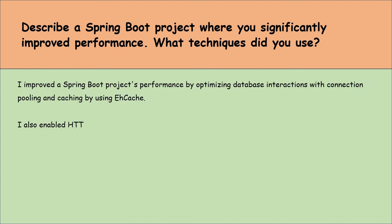Your application needs to store and retrieve files from a cloud storage service. Describe how you would integrate this into a Spring Boot application. To integrate cloud storage, I would use a cloud SDK like AWS SDK for S3 or Google Cloud Storage libraries depending on the cloud provider. First, add the SDK as a dependency in the pom or Gradle file. Then configure the necessary credentials and settings in application.properties or YAML file for accessing cloud storage. I would create a service class to encapsulate the storage operations like uploading, downloading and deleting files. By autowiring this service where needed, I can interact with cloud storage seamlessly, leveraging Spring's dependency injection to keep the code clean and manageable.